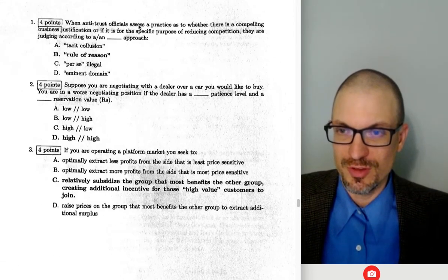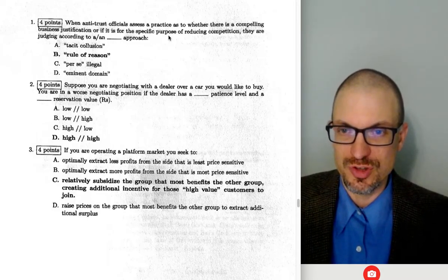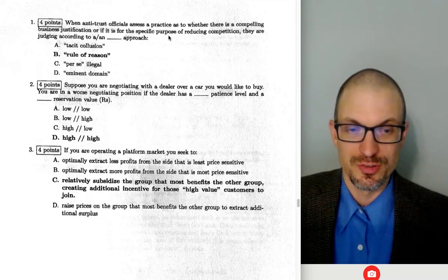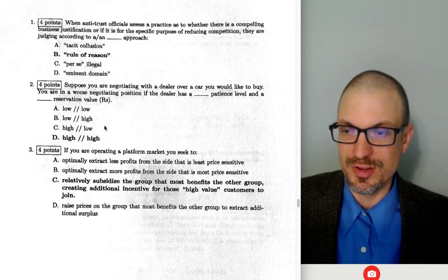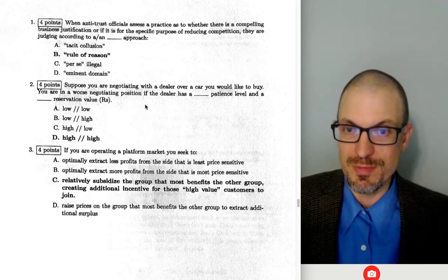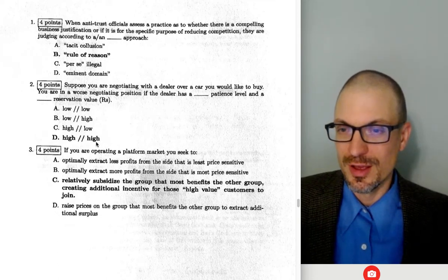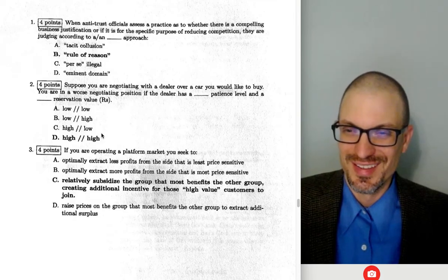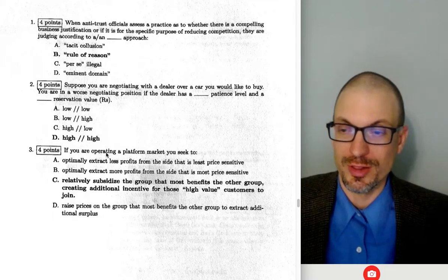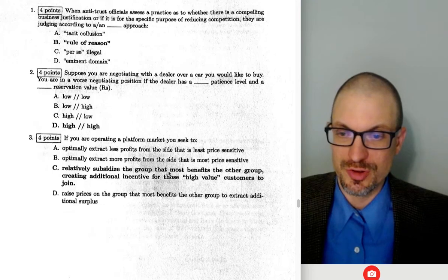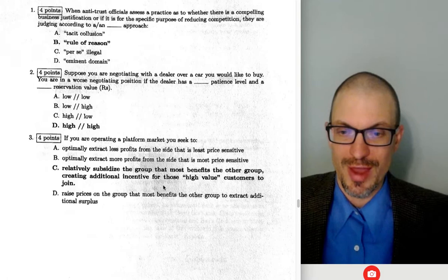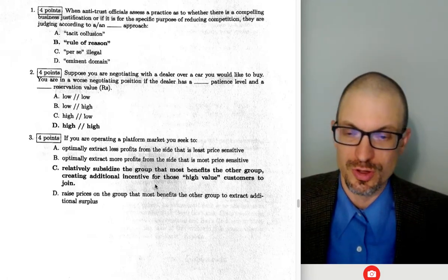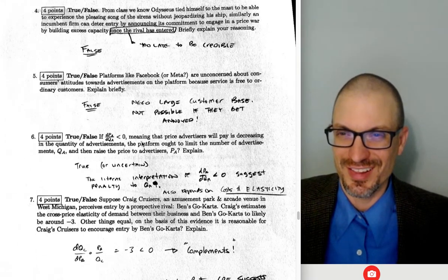Exam two begins. When antitrust officials assess whether a practice has a compelling business justification or simply reduces competition, that's the rule of reason approach — per se illegal applies to things like price fixing with no gray area. In a car negotiation, the worst position is facing a dealer with a high patience level and a high reservation value, since they'll demand a high price. In a platform market, you subsidize the group that benefits the other group — Google offers free browsing and charges advertisers who want to reach those users.